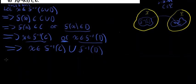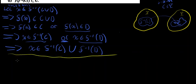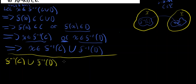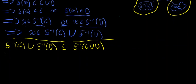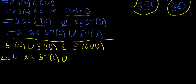Now let's go the other direction — let me change to yellow. We're going to show that the inverse image of C under F, union the inverse image of D under F, is a subset of the inverse image of C union D under F. So let x be in the inverse image of C under F union the inverse image of D under F.